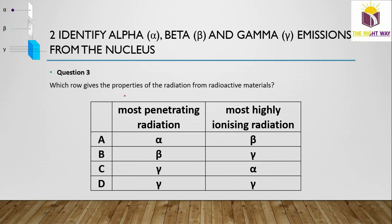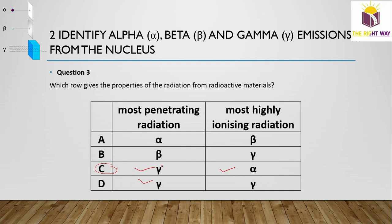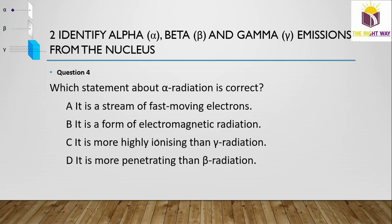Question 3: Which row gives the properties of radiation from radioactive material? The most penetrating radiation is gamma, so options C or D could be correct. The most ionizing is alpha particles. Therefore, C is the right option: gamma is the most penetrating and alpha is the most ionizing.